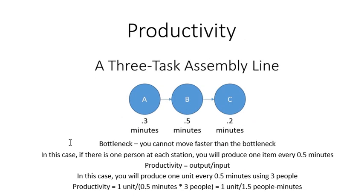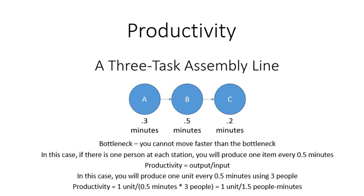Now let's do a quick talk about productivity. Looking back at this three-step function, you can't move faster than the bottleneck unless you put more people in this area. It's going to take 0.5 minutes using three people — one for each station — meaning every 0.5 minutes we produce one unit. Productivity is our output, one unit, divided by our input, which is half a minute and three people. Our overall productivity is one unit per every one and a half person-minutes.